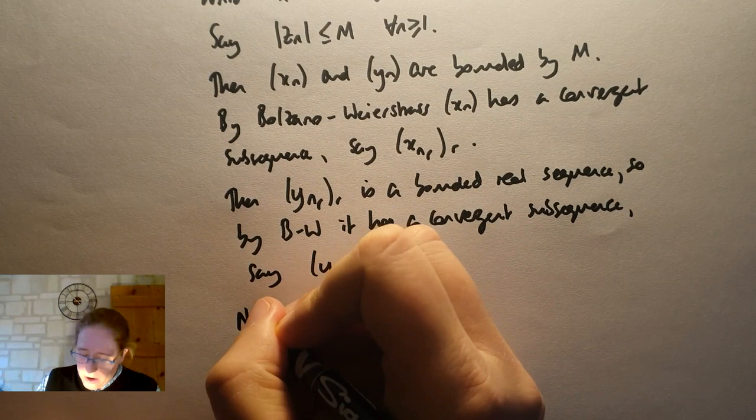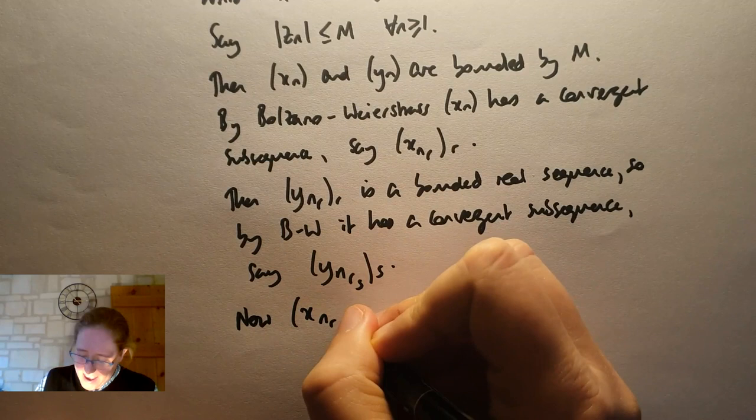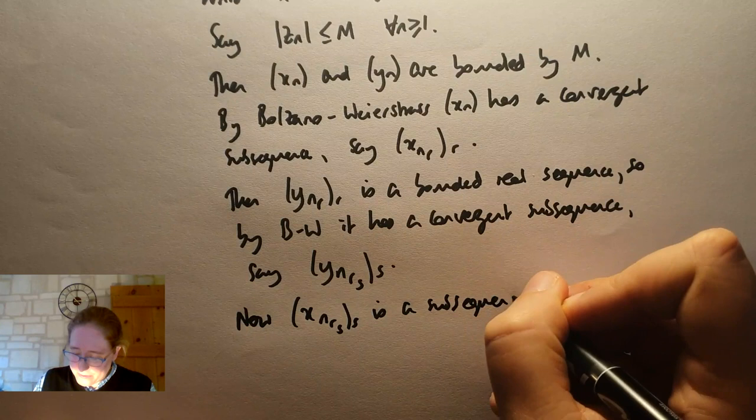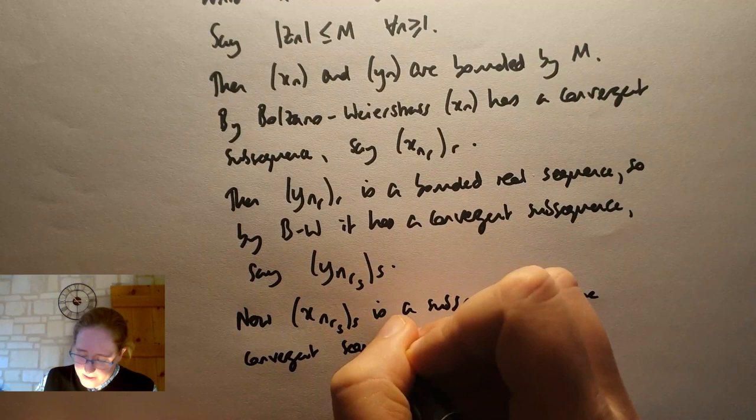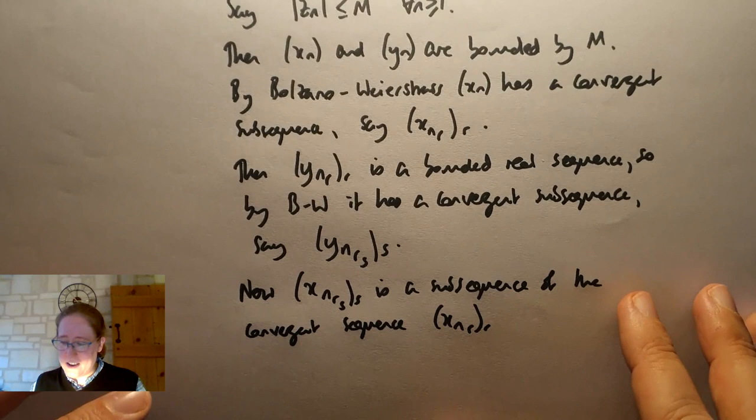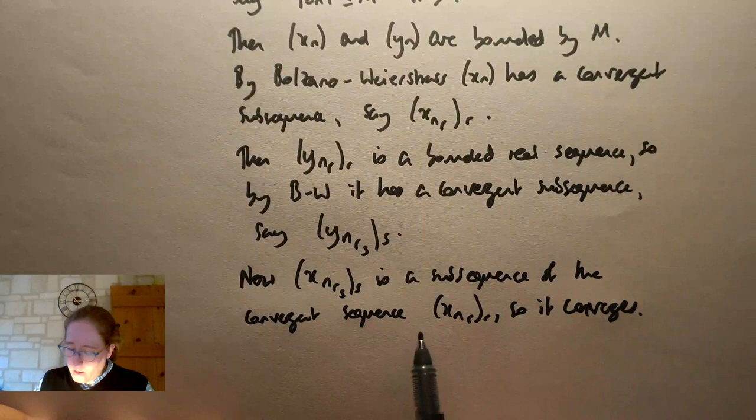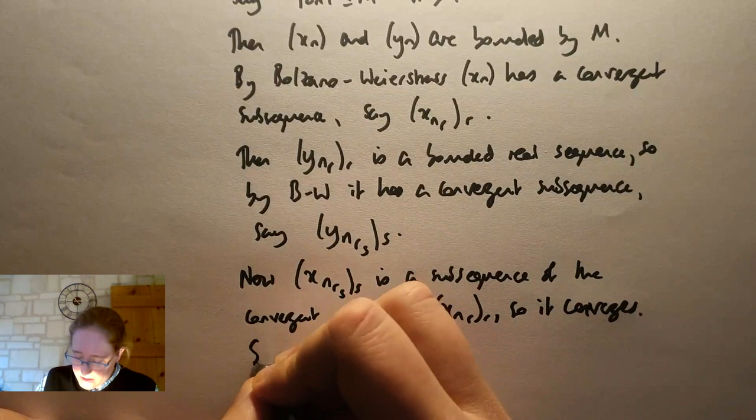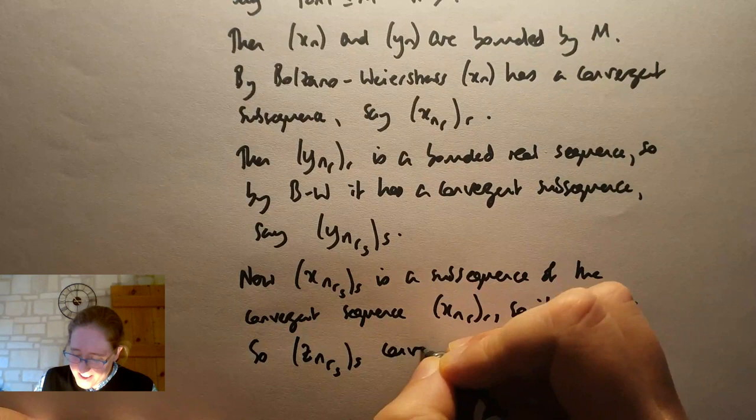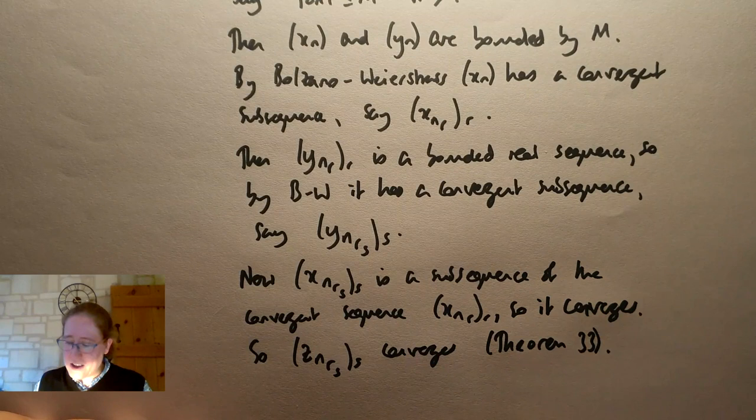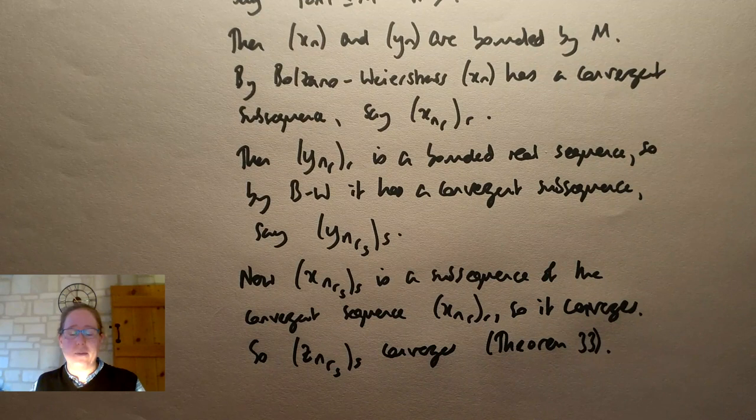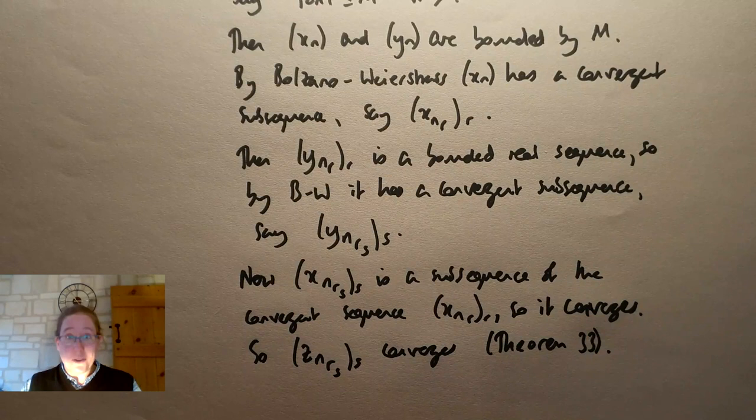So the real part, we took a convergent subsequence, then we looked at the relevant subsequence of the imaginary parts and refined again to a convergent subsequence. If we look back at the real parts of that refined subsequence, so x_(n_(r_s)), is a subsequence of the convergent sequence x_(n_r). I'm trying to make my r's and n's look different for you. So it converges. We proved previously that a subsequence of a convergent sequence converges. So the real and imaginary parts, if you like, in these subsequences converge, and so z_(n_(r_s)) converges. I think that might have been theorem 33, the one that says that a complex sequence converges if and only if the real and imaginary parts converge. And we've shown that in this case, the real and imaginary parts do converge, and so the whole sequence converges.